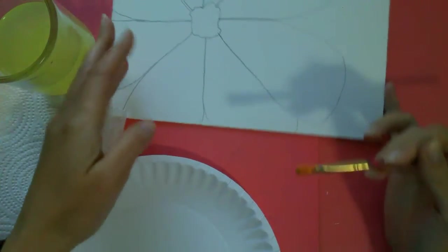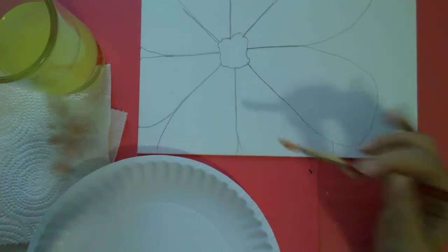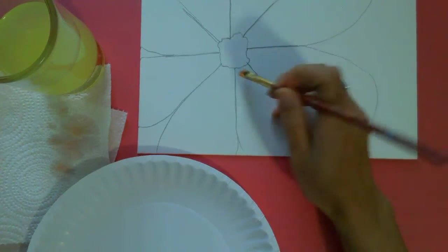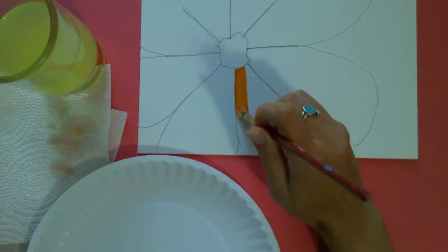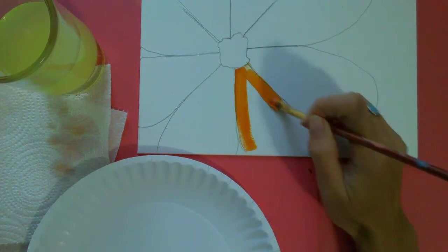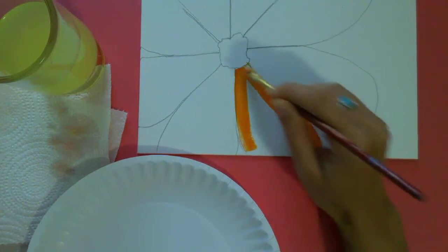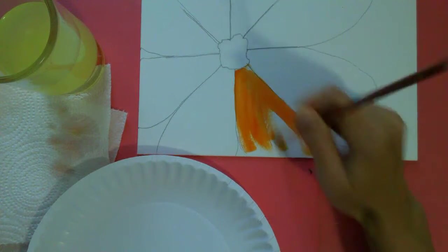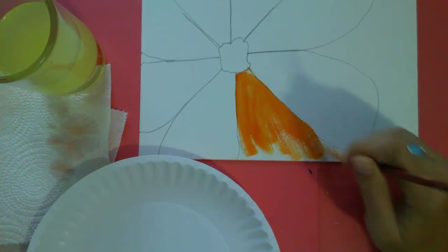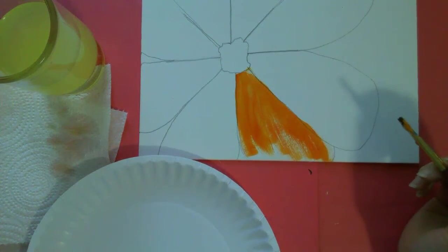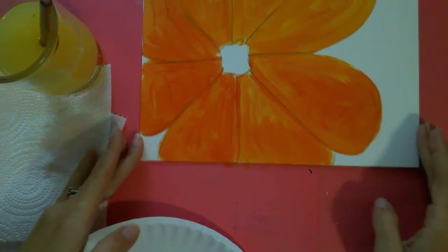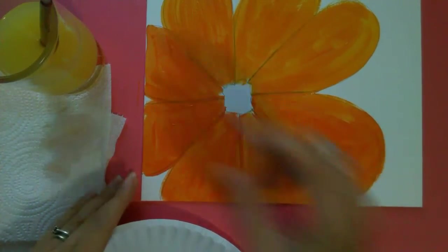If I run out of this orange color while I'm painting, I can just mix some more. So what I'm going to do now is I'm going to start painting my petals. And it's okay if you get out of the lines. All right. I'm going to pause the video while I paint all my petals. Be back in a minute.